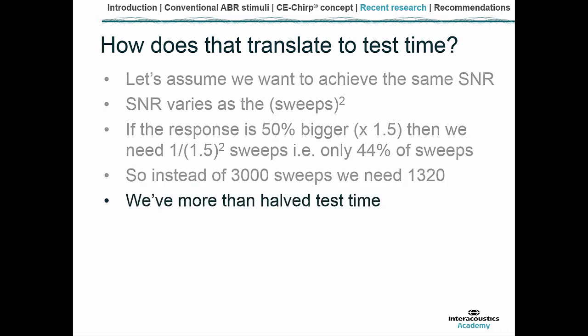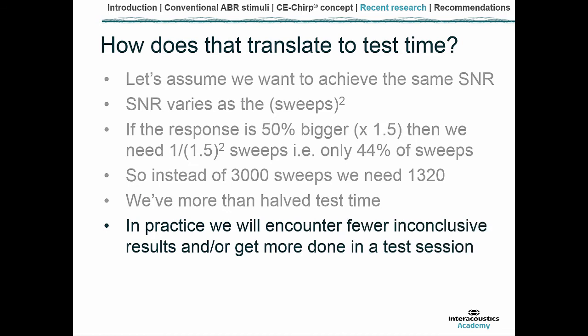In practice, we'll encounter fewer inconclusive results, or we may get more done. If a hearing loss is present, it's good to move on swiftly to get more results to feed back to parents. It could also mean shorter test time overall, though I'm a little cautious on that point — we need to make sure babies are settled, and if we cut test time too much the baby may not have settled anyway, making the choice of chirps or tone PIPs irrelevant.